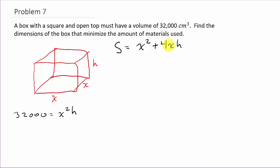Now we need to take the derivative and set it equal to zero, but before we do that, I want to get everything in terms of one variable. Let's get everything in terms of X, so we'll solve for H. H is 32,000 over X squared.